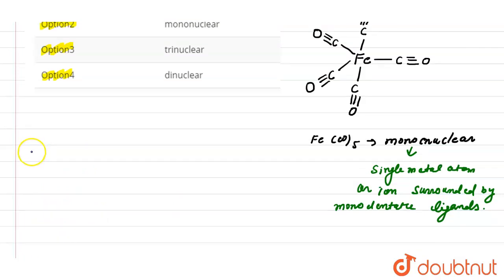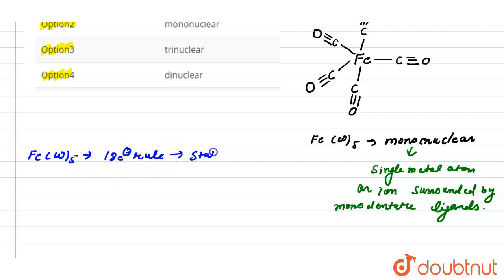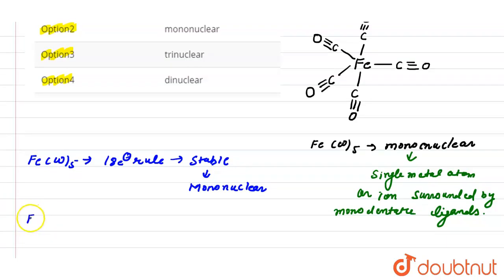This compound being mononuclear can also be proved by the 18-electron rule. If iron carbonyl satisfies the 18-electron rule, it means this compound is stable and mononuclear.